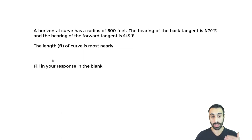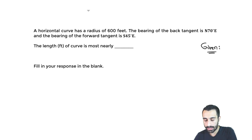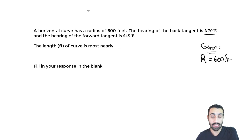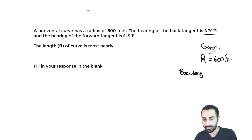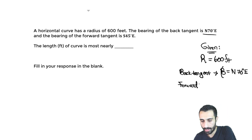Now let me run through this with you. We know that the horizontal curve has a radius of 600 feet. Keyword: we're working with a horizontal curve. Its radius is 600 feet. So already I want to denote what I'm given — the radius is 600 feet. It says the bearing of the back tangent is north 70 degrees east. So for the back tangent, we'll use the Greek letter beta for bearing: beta equals north 70 degrees east. And the bearing of the forward tangent is south 45 degrees east, so that forward tangent bearing beta equals south 45 degrees east.